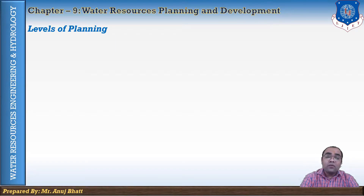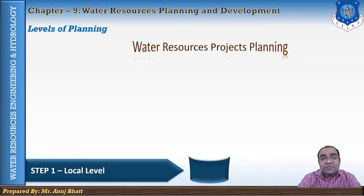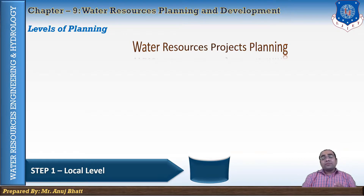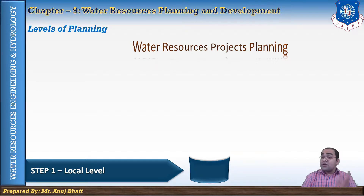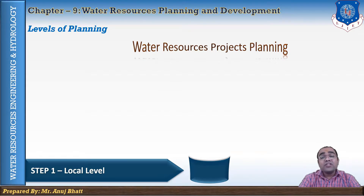The first level of water resource project planning is the local level. When a water resource scheme is planned for a very small area or village, that is known as the local level plan. Local level planning includes watershed development plans for the village, rainwater harvesting techniques, and soil conservation methods. Check dams also help in enhancing water resources at the local level. In Gujarat, a large number of check dams have been constructed under the Sardar Patel Sahabhagidari Jalsinchai Yojana.